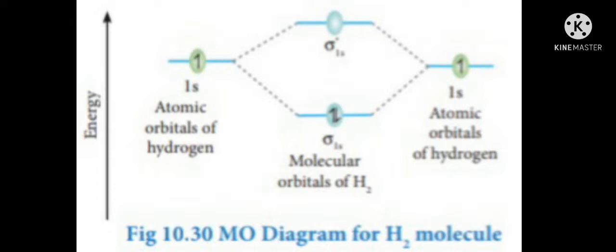In this diagram, the left side and right side show the atomic orbitals of the hydrogen atom, and between them we have the molecular orbital of the hydrogen molecule. Hydrogen has atomic number 1, so its electronic configuration is 1s¹ — that is, the 1s orbital with one electron. We place the 1s orbital on the left side and right side, with one electron each. As per molecular orbital theory, two 1s orbitals combine together to form two molecular orbitals — one with lower energy and another with higher energy.